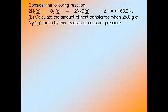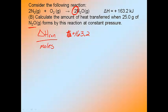Now let's move on to letter B. Same process, same chemical reaction. It says, calculate the amount of heat transferred when 25 grams of N2O forms by this reaction at constant pressure. Here's the thing about this reaction. This delta H is actually a ratio to the number of moles that are in the chemical reaction because chemical reactions are always based in number of moles. So where do I get the number of moles from for the delta H? It's actually already in the chemical reaction. So since we're talking about N2O, here are my moles, 2.